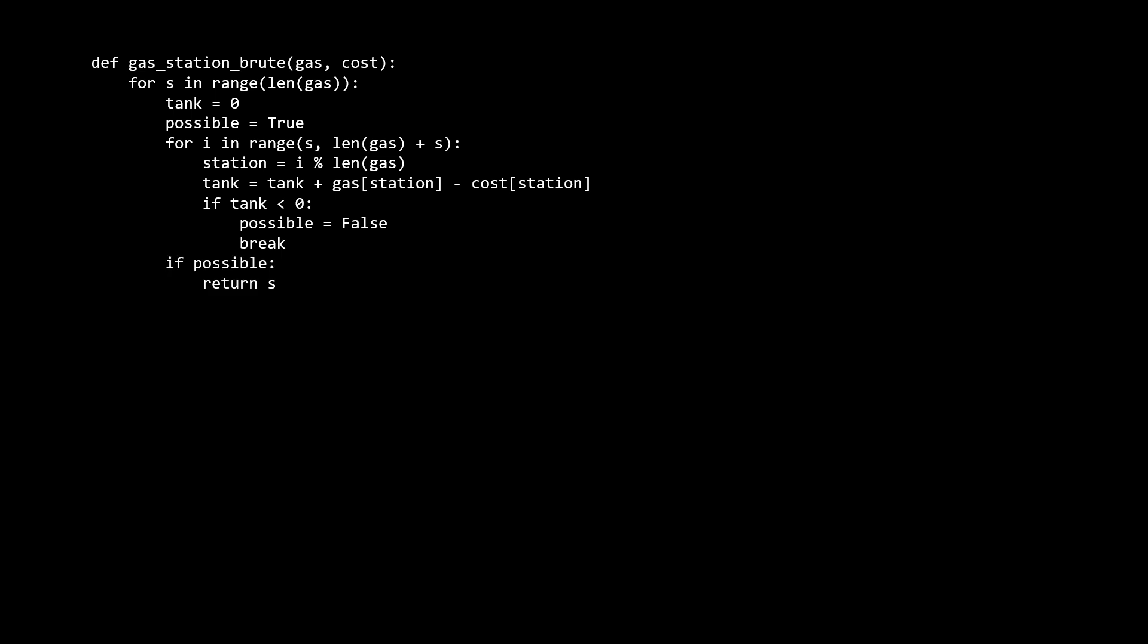If possible ends up true at the end of the simulation, it means the gas station never fell below zero, which means that it's possible to use this starting point to make a round trip so we can return S. If we try all the simulations and none of them work, it means that there is no possible way to make a round trip, regardless of which station we start at, so we return negative one to symbolize this. For time complexity, worst case is that we run N simulations with each gas station as a starting point. Each simulation takes N steps in itself, so we have N squared running time. For space, we don't use any extra space, so that's constant.